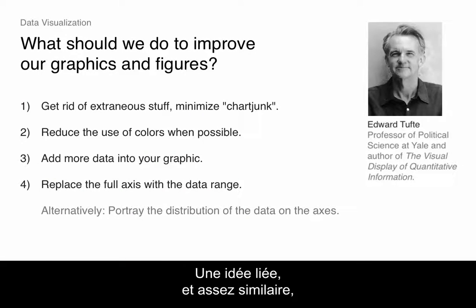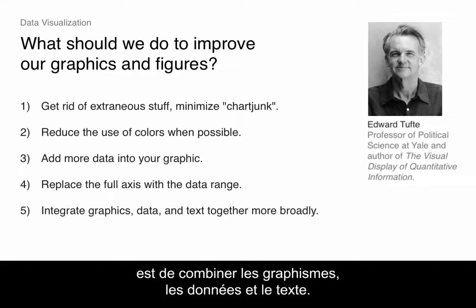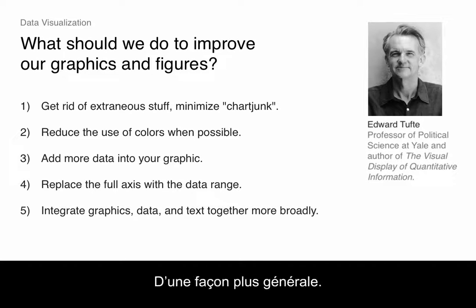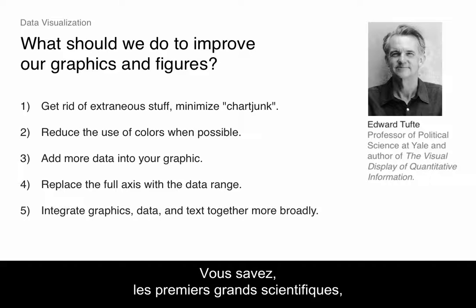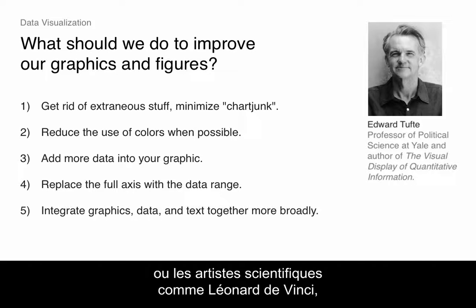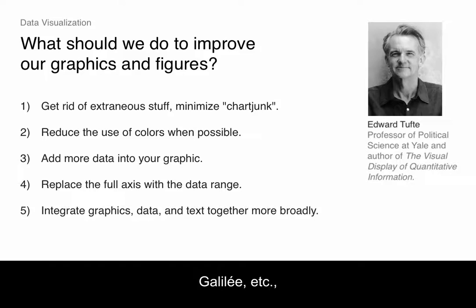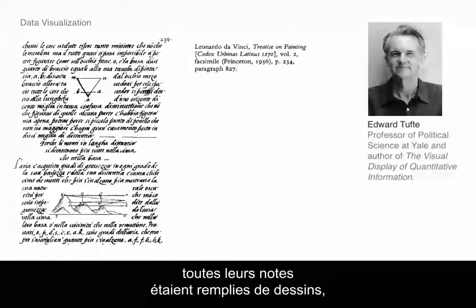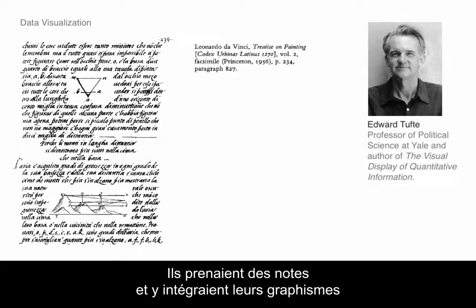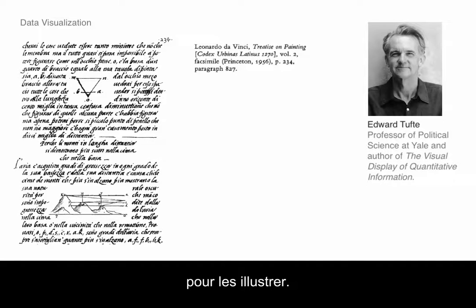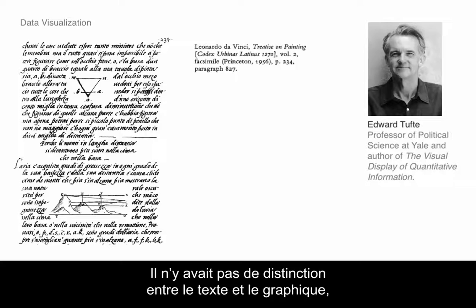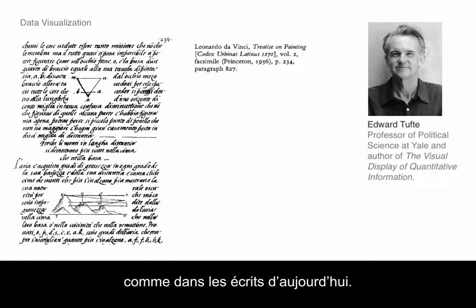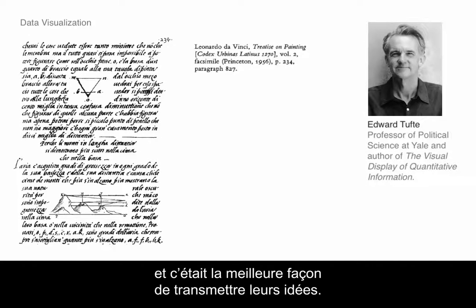A related point is to try to integrate graphics, data, and text together more broadly. Famous early scientist-artists like Leonardo da Vinci and Galileo had notes littered with graphics integrated throughout — they would be writing and integrate what they were talking about together. There was no distinction between 'here's the text' and 'here's the figure,' the way we often write our papers. The early scientists integrated these things, and that was the best way to convey their ideas.